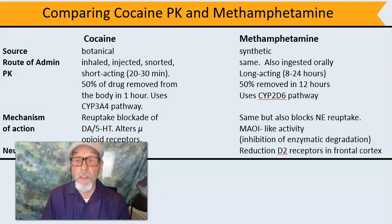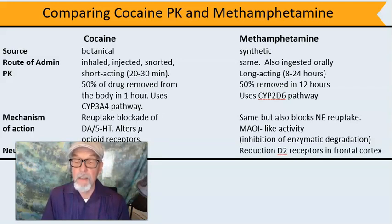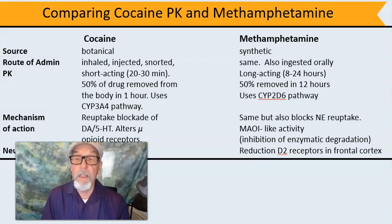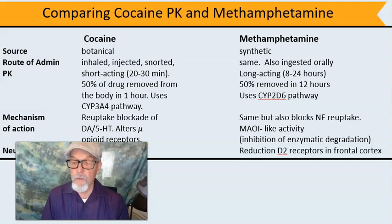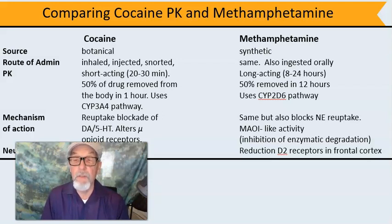Cocaine blocks reuptake of dopamine and serotonin and also alters mu opioid receptors — it's a little peculiar that a psychostimulant like cocaine interacts with our endorphin system. Methamphetamine does the same reuptake blockade of dopamine and serotonin, but also blocks reuptake of norepinephrine. Unlike cocaine, methamphetamine inhibits MAO, resulting in more dopamine in the synapse for longer periods of time, stimulating receiving neurons over and over again. There's not really any neurotoxicity of cocaine unless it's been adulterated, but there is neurotoxicity from repeated methamphetamine use, resulting in dopamine D2 receptor derangement in the frontal cortex.